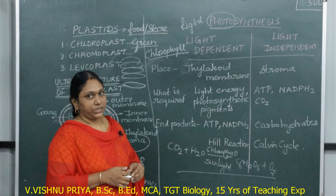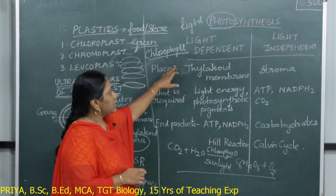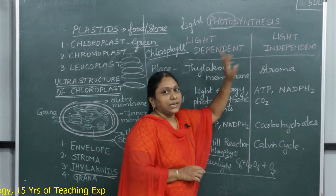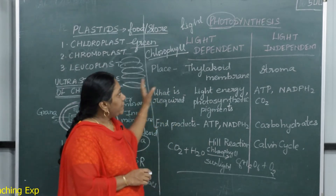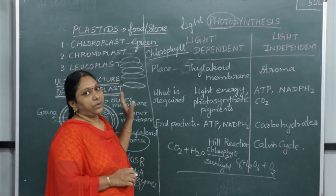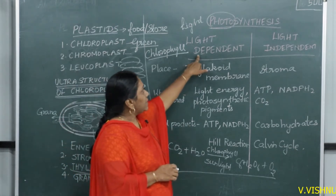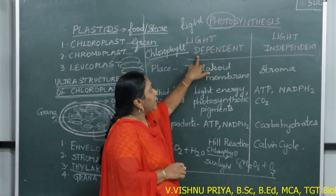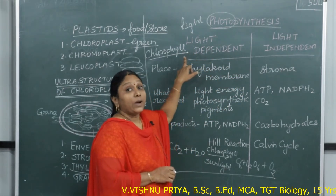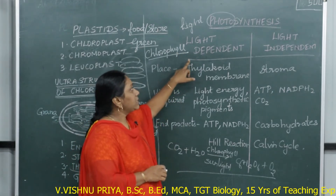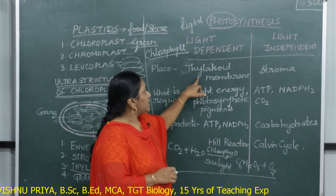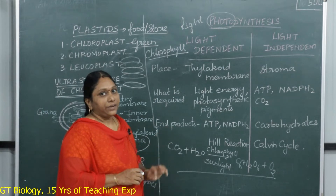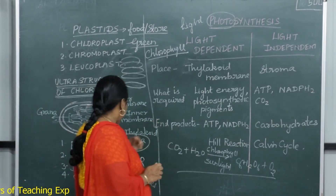Photosynthesis takes place in two phases: one is the light-dependent reaction and the second is the light-independent reaction. The complete photosynthesis process takes place inside the chloroplast. By the name itself, light-dependent reaction requires light, and it takes place in the thylakoid membrane of the chloroplast.